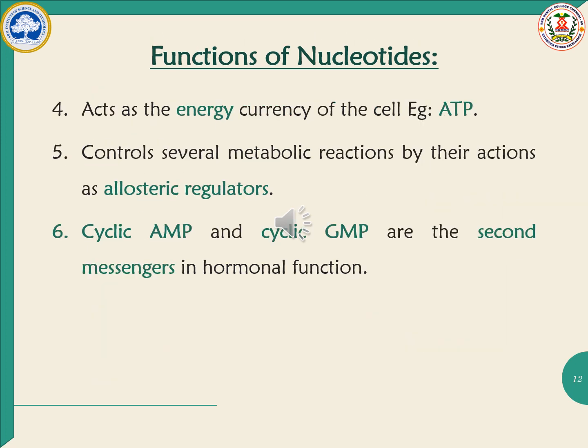Another important function of nucleotides is serving as the energy currency of the cell — for example, adenosine triphosphate (ATP) acts as the high energy currency of the cell. Nucleotides also control metabolic reactions by acting as allosteric regulators, either inhibiting or activating metabolic reactions. Additionally, nucleotides such as cyclic AMP and cyclic GMP act as second messengers in hormonal functions, passing hormonal signals to the respective target proteins.